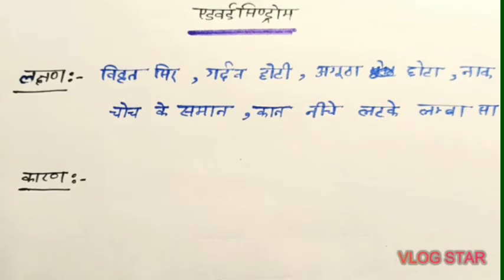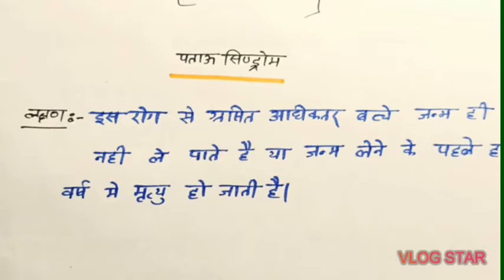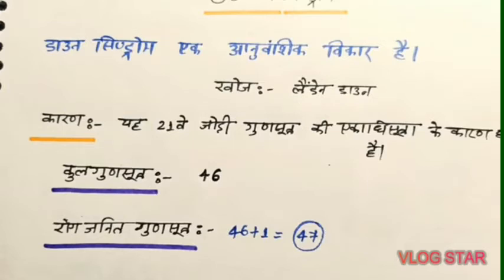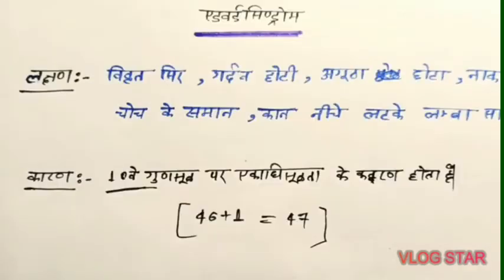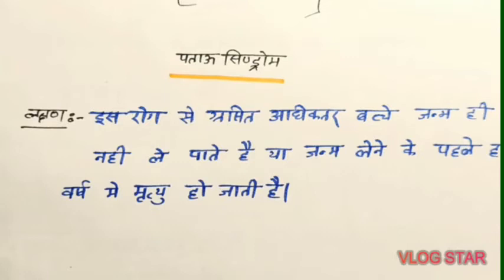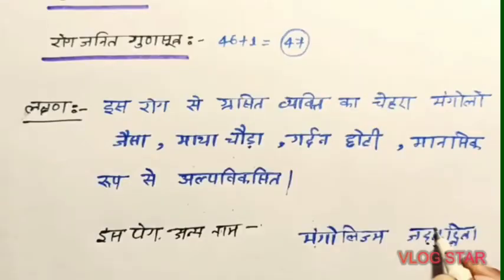Down Syndrome is also a genetic disorder. Iski khoj Leaded Down ne ki thi. Isme 46 jode ke sthan pe 47 joda gene se judta hai. Is rog se grast vyakti ka chehra Mongoloid jaisa, matha chota, gardan chhoti aur mansik roop se alp vikasit hote hain. This child shows Mongoloid fullness illness, with a flat face, small neck, and underdeveloped brain.